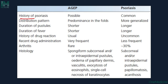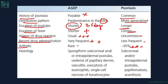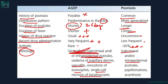Differentiating AGEP from pustular psoriasis: in psoriasis there is a history of psoriasis, whereas AGEP has no such history. AGEP has a shorter duration of two to five days; fever is of short duration; drug history is present in AGEP but uncommon in psoriasis; arthritis is rare in AGEP but associated with pustular psoriasis. Histologically, AGEP shows spongiform subcorneal or intraepidermal pustules with papillary dermal edema, vasculitis, eosinophil exocytosis, and single-cell keratinocyte necrosis, while psoriasis additionally shows papillomatosis, acanthosis, Munro microabscesses, and spongiform pustules of Kogoj.